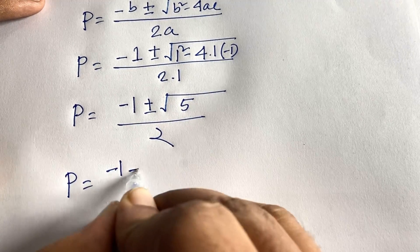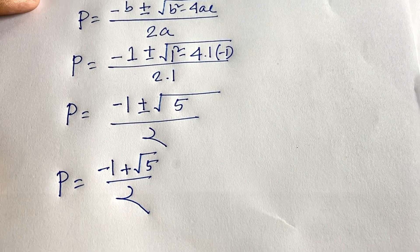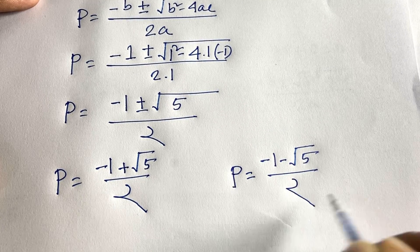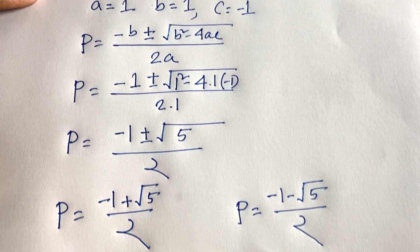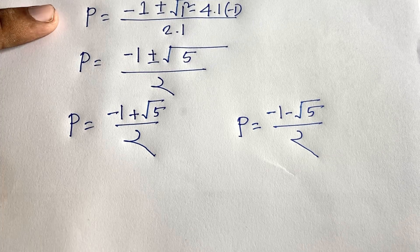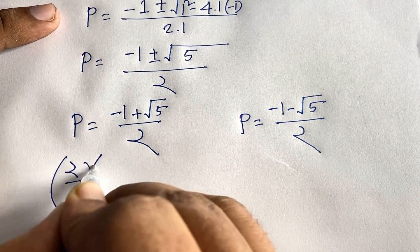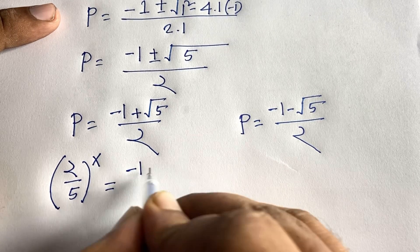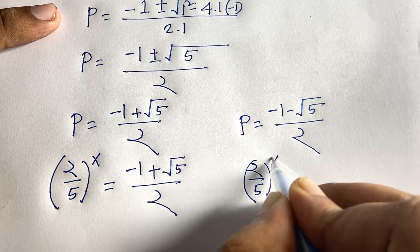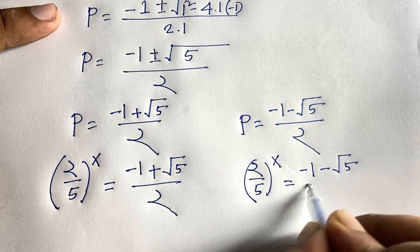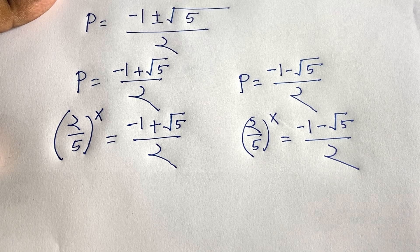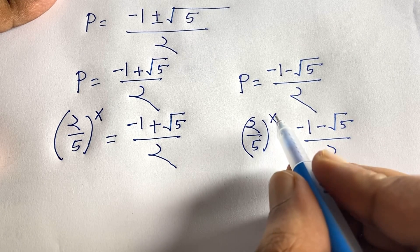So we find two solutions: p = (-1 + √5) / 2, and p = (-1 - √5) / 2. Substituting back p = (2/5)^x, we get (2/5)^x = (-1 + √5)/2 and (2/5)^x = (-1 - √5)/2.